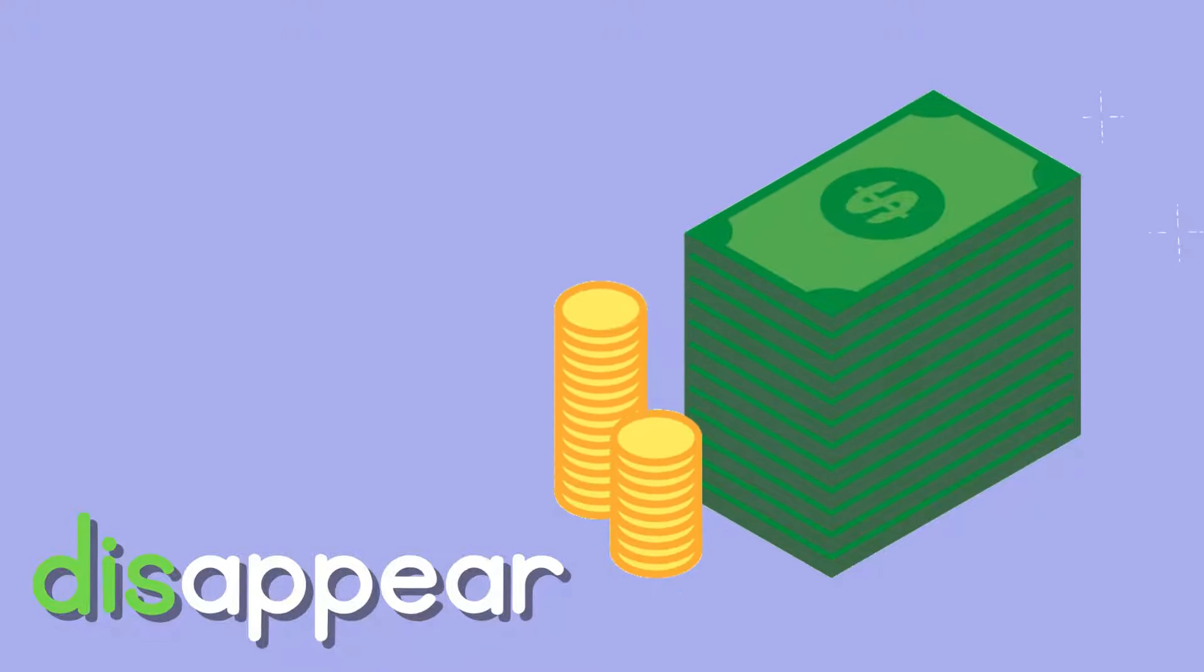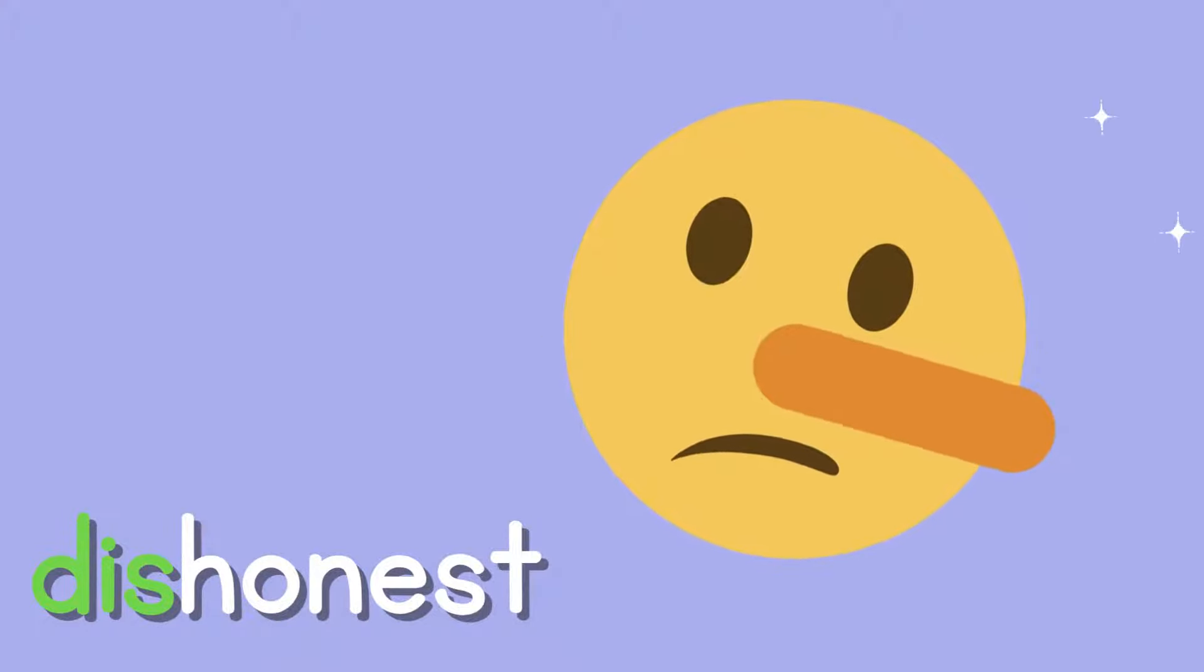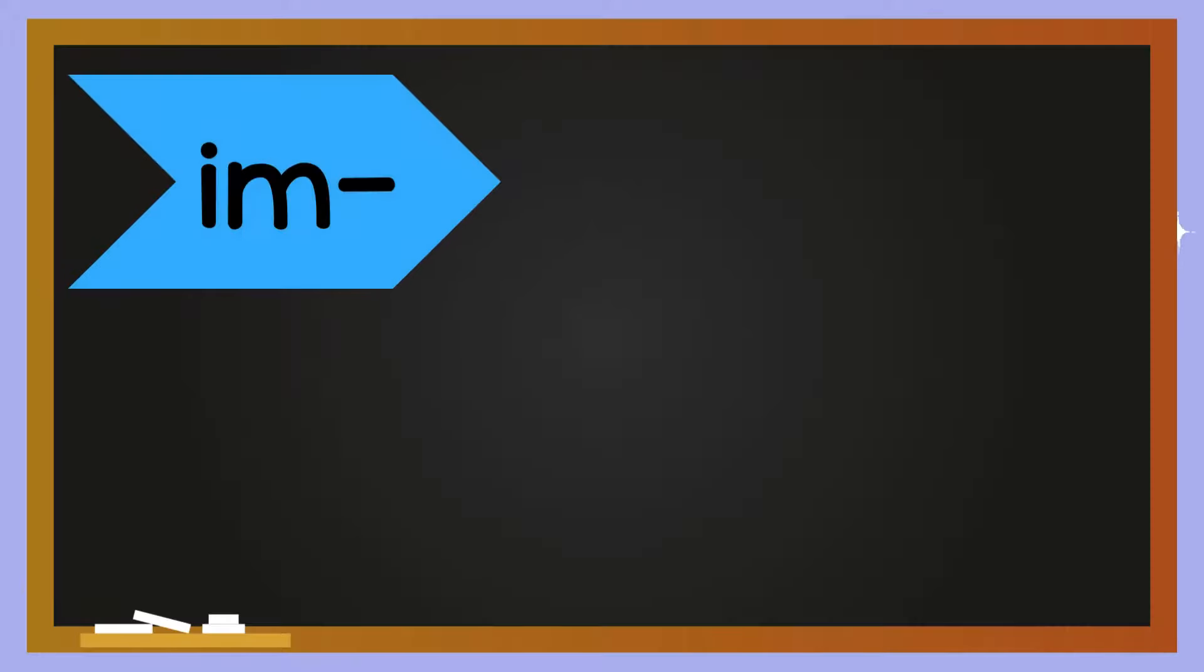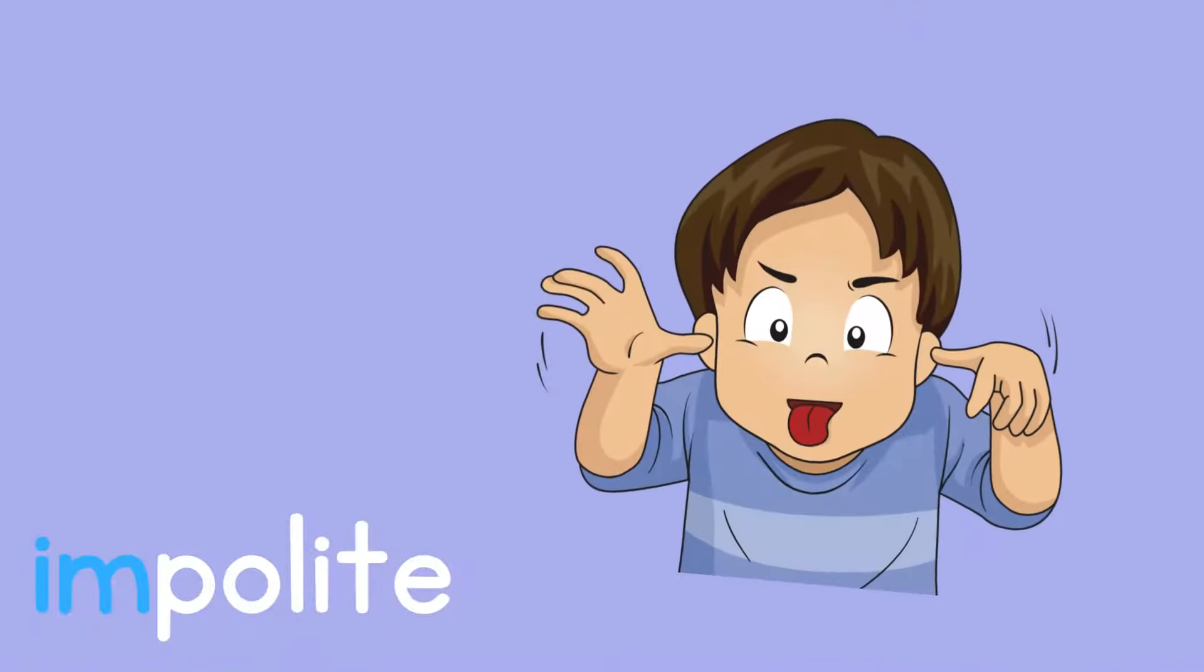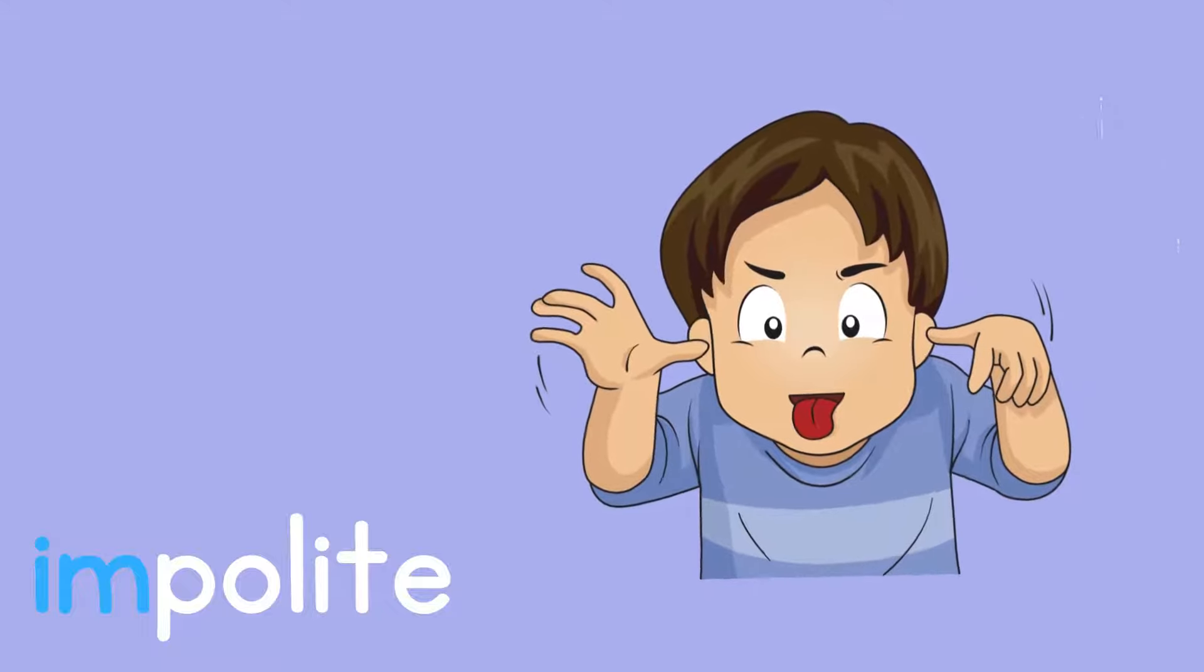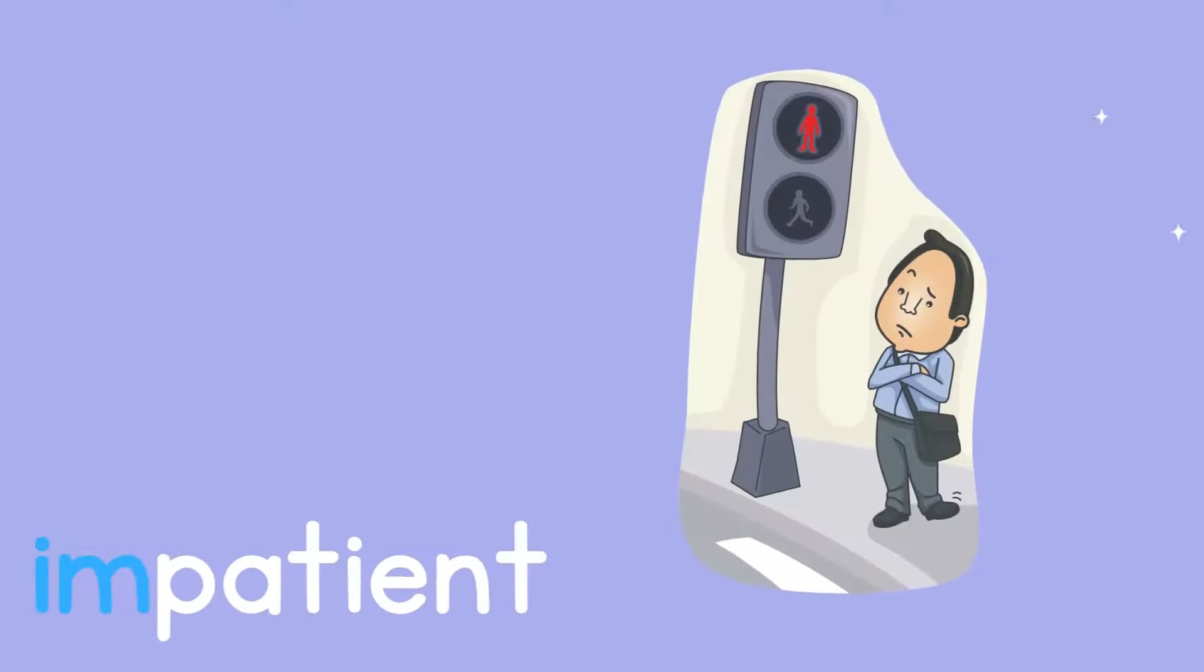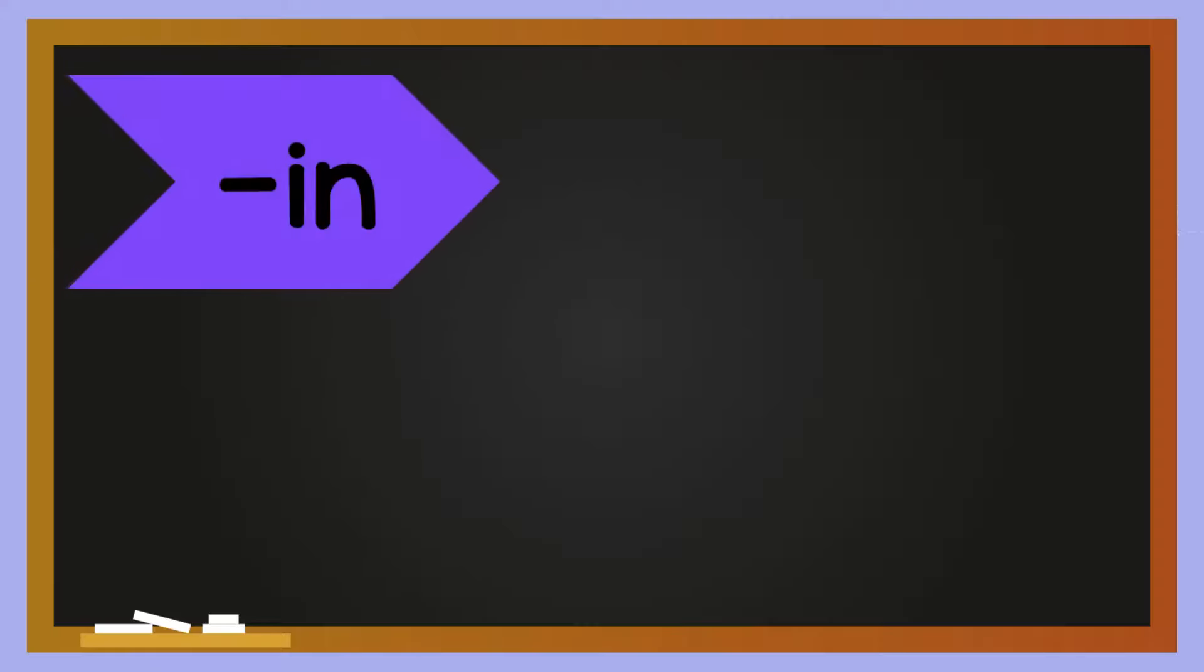Im: means not or opposite of. Impolite means not polite. Impossible. In, which is very similar to im, means not or opposite of. Incomplete means not complete. Independent. Inactive.